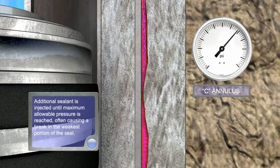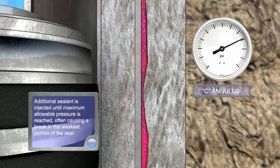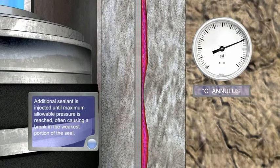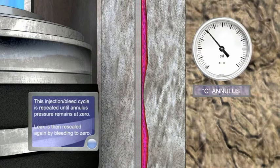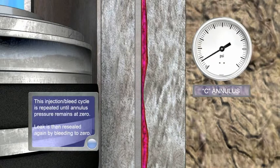Additional sealant is injected until maximum allowable pressure is reached, often causing a break in the weakest portion of the seal. This injection bleed cycle is repeated until annulus pressure remains at zero.